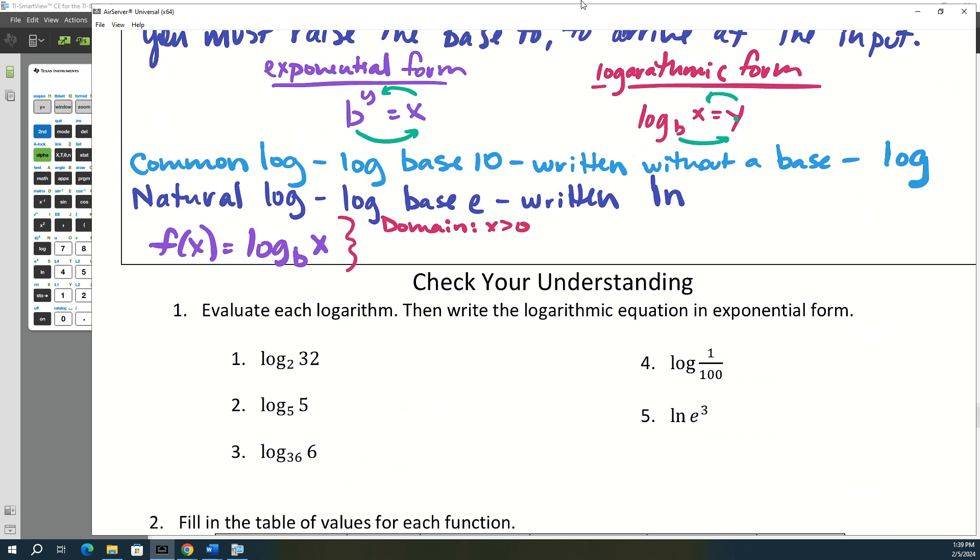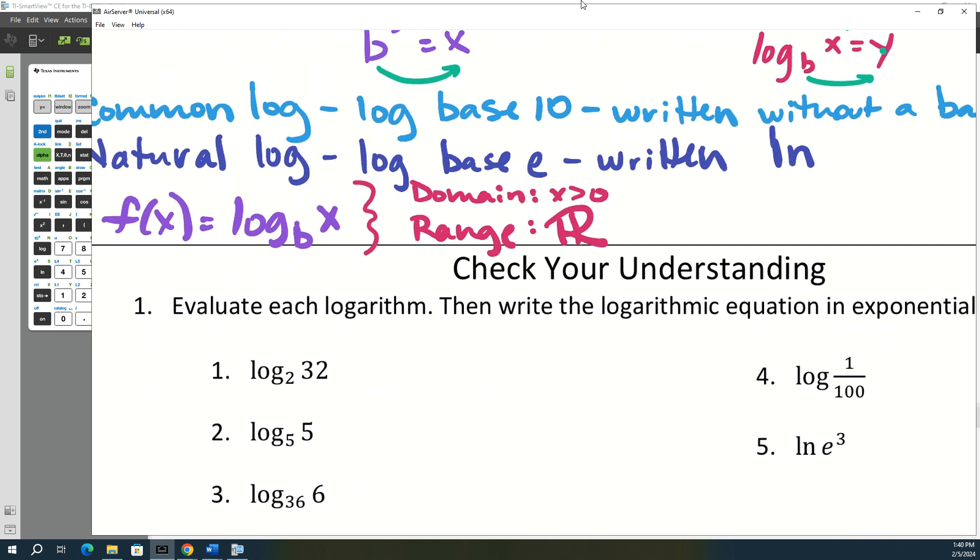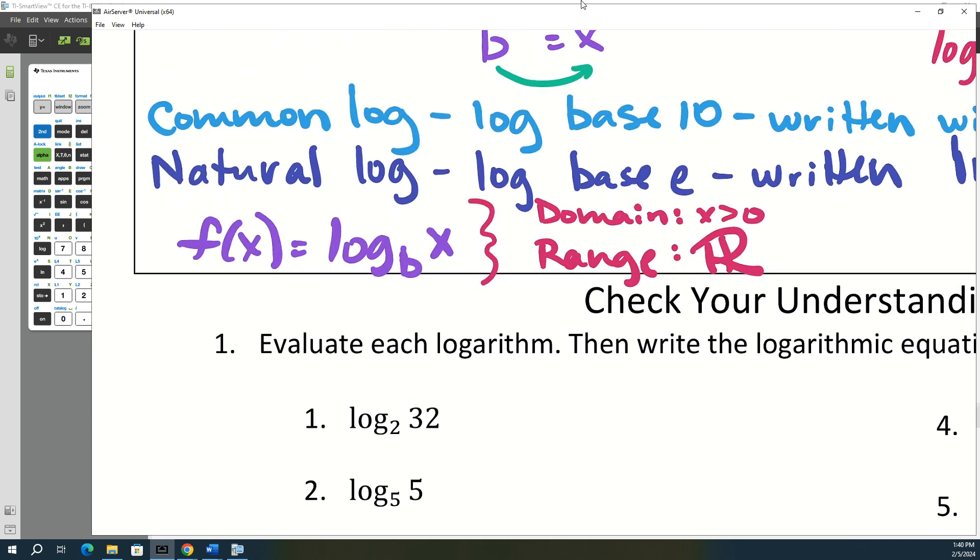So the domain is going to be x is greater than 0, because you can't raise something to a power and ever make it zero or ever make it negative. However, the range has no restrictions. The range is all real numbers, because anything you can have an exponent that's any real number—fraction, decimal, zero, and positive, negative, anything. No restrictions on it.